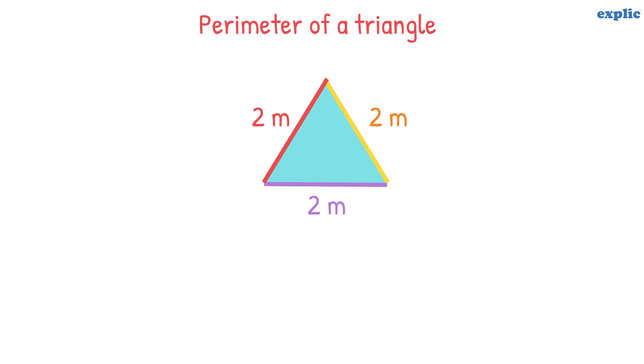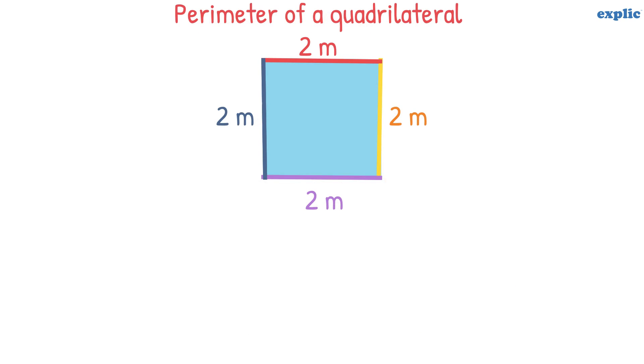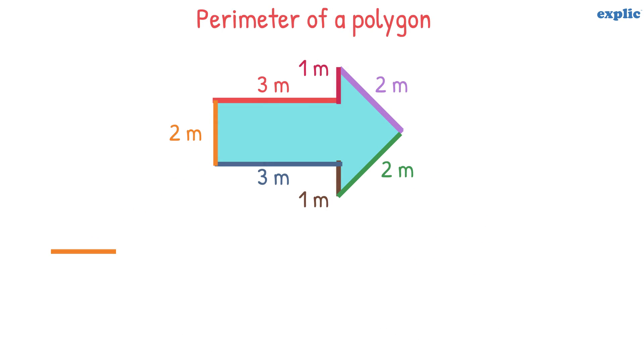The perimeter of a triangle is the sum of the length of all three sides. Similarly, the perimeter of a quadrilateral is the sum of the length of all four sides. You can find the perimeter of any polygon just by adding the length of all sides.